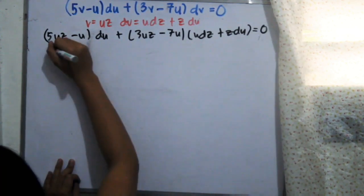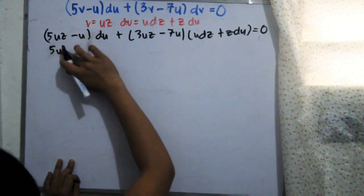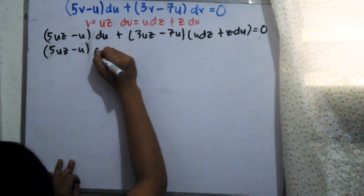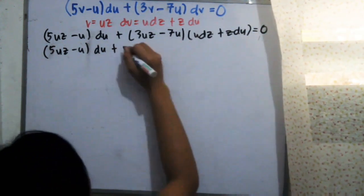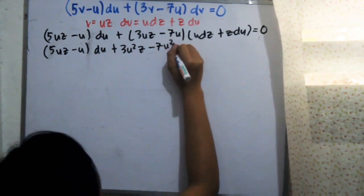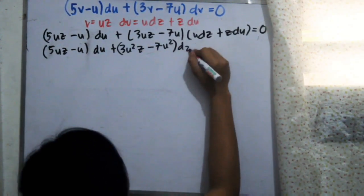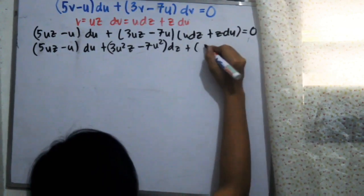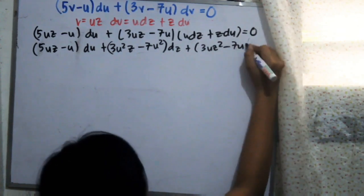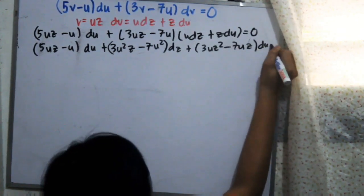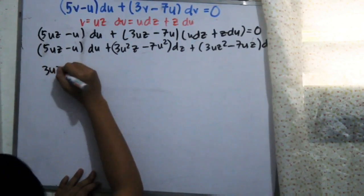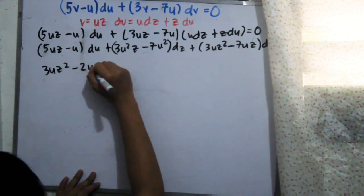Now we substitute all the v variables with u multiplied by z. We arrive at 5uz minus u divided by du, and then distributing everything we get 3u²z minus 27u² dz plus 3uz² minus 7uz du, all equals to zero.